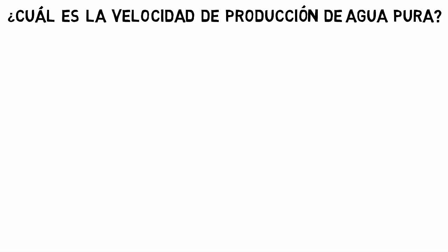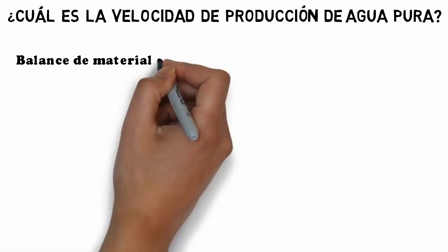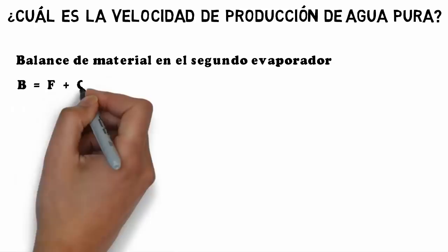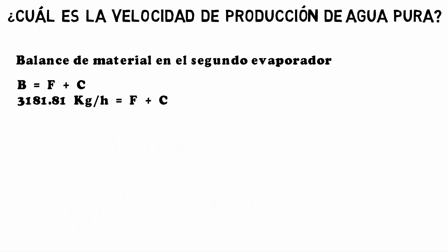To obtain the value for inciso C — the pure water production rate — we perform a mass balance on the second evaporator. The inlet is stream B, and the two outlets are F and C. The flow rate of B is 3181.81, which equals F plus C.